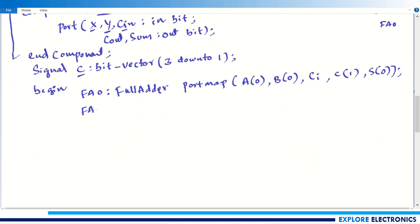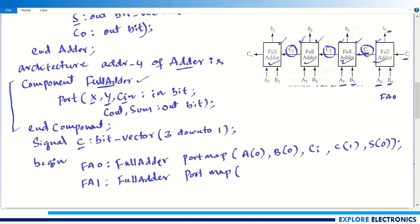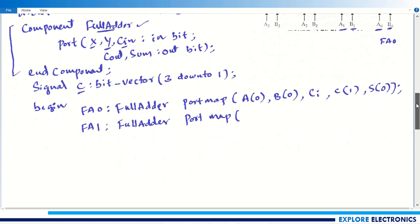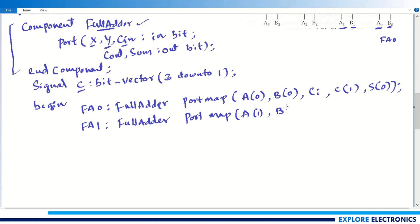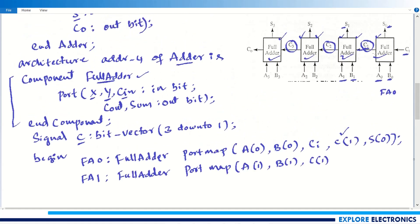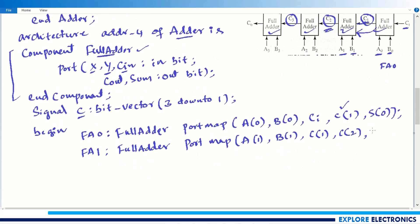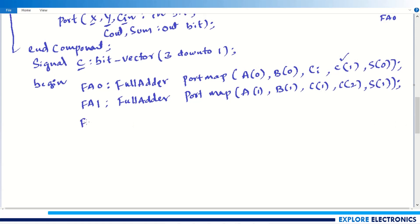Similarly for the second full adder fa1: 'fa1 : full_adder port map(a(1), b(1), c(1), c(2), s(1))'. Here c(1) is the carry input from fa0, c(2) is the carry output, and s(1) is the sum. For the third full adder fa2: 'fa2 : full_adder port map(a(2), b(2), c(2), c(3), s(2))'.